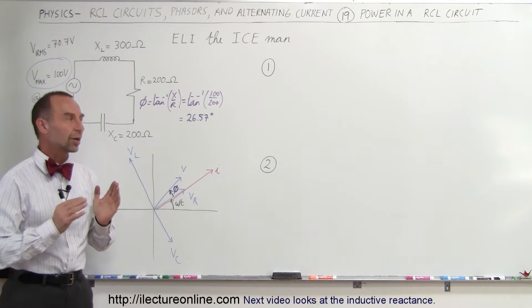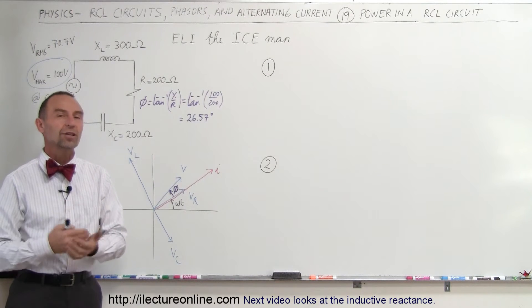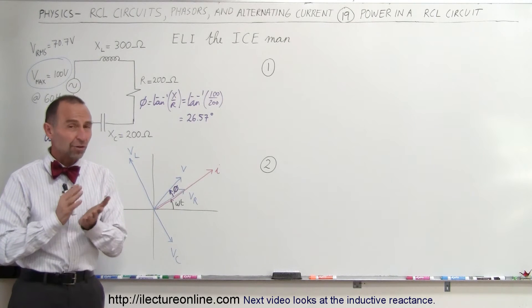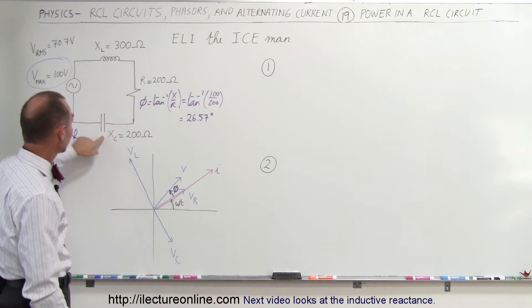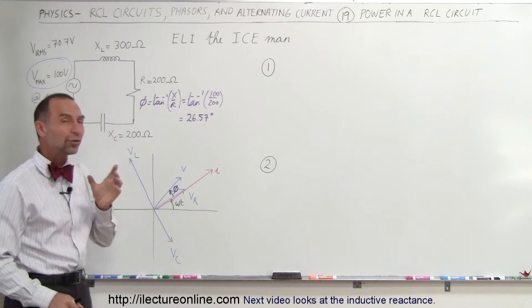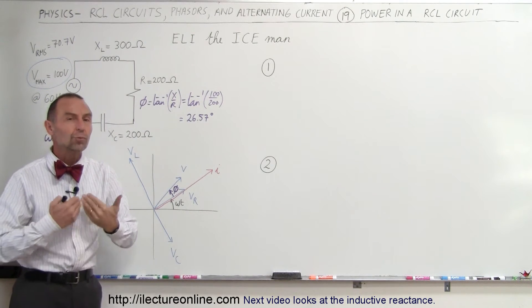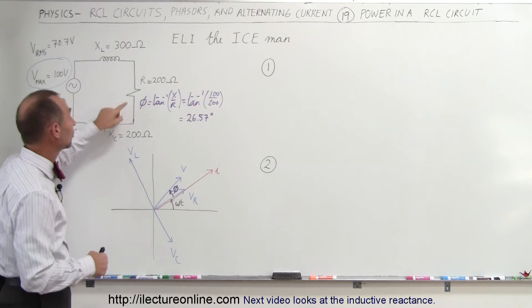Welcome to Electron Align, and here we're going to talk about the power consumed by an RCL circuit. It turns out that in an RCL circuit, even though there's three components - a resistor, a capacitor, and an inductor - only one of those three components actually consumes power, consumes energy in the circuit, and that is the resistor.